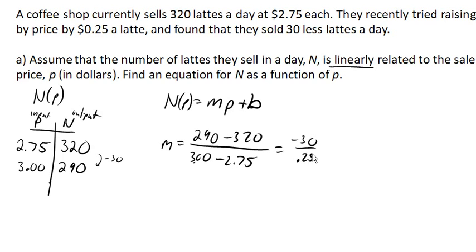You might notice that we could have actually pulled this information out earlier. They tried raising the price by 25 cents, and they sold 30 less lattes in a day. So we could have actually skipped this step if you had noticed, but this works just fine too. And so that gives us a negative 120 as our slope.